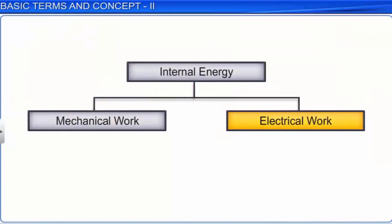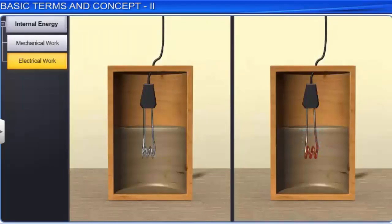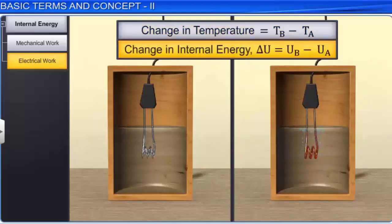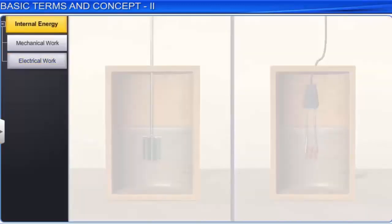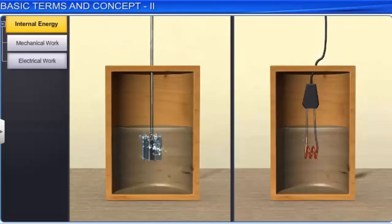In the second method, internal energy can be increased by the same amount by doing electrical work. In this, an immersion rod is kept in water and the temperature before and after is measured. We find the change in temperature as TB minus TA. Hence, delta U = UB minus UA. Thus, internal energy changes to the same extent either by doing mechanical work or electrical work, which indicates that it is independent of the manner in which the change is brought about. Therefore, internal energy is a state function.